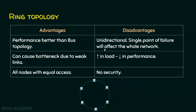Being unidirectional is one disadvantage. Another is the single point of failure — if one link fails, the entire network is disrupted. A node failure or link failure will definitely affect the entire network. Under high network load, performance degrades. Since data must cross many intermediary nodes, there is no security in ring topology either.